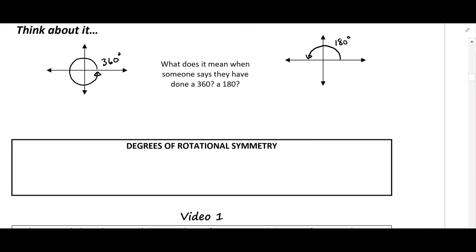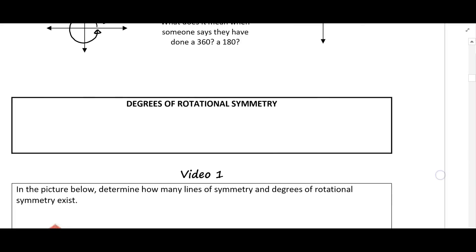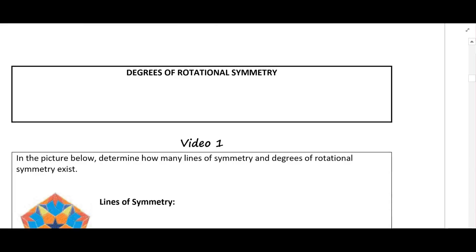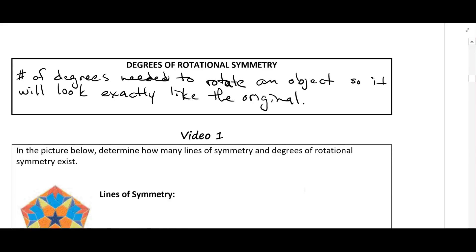And we're going to talk about rotating geometric figures. And when we talk about the degrees of rotational symmetry what we mean is the number of degrees needed to rotate an object so it will look exactly like the original. So when we rotate an object that has rotational symmetry, when we get it to a certain spot it'll look exactly like it did when we started. It won't look any different.